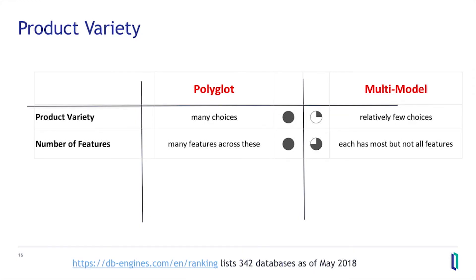First, what's the level of choice you as an architect or application developer have? In the polyglot world, with specialized data stores, you have an enormous amount of choice. DB Engine's ranking lists 342 databases — though it's all based on popularity, so take that for what it's worth. But you've got a lot of choice, and there are advanced features in some of those that are pretty cool.